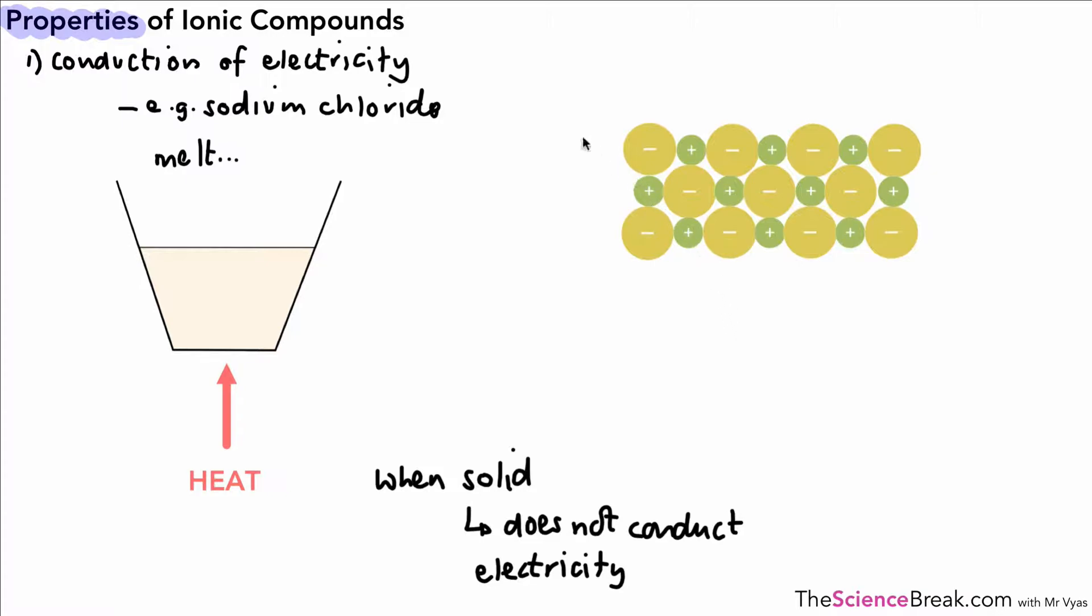Here's our lattice structure for our sodium chloride. If we provide enough energy, that energy would be enough to break the strong bonds that are holding the ions together and the sodium chloride would melt.